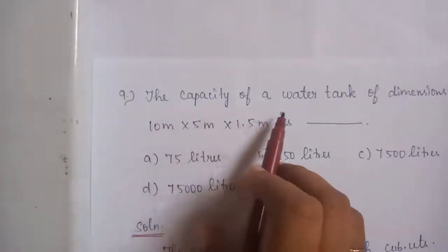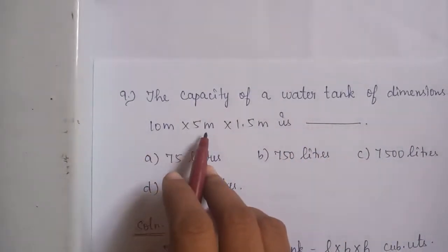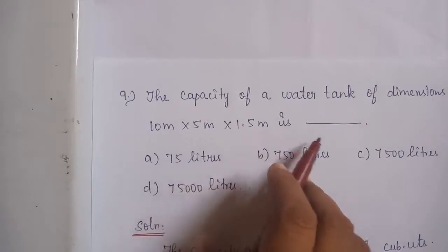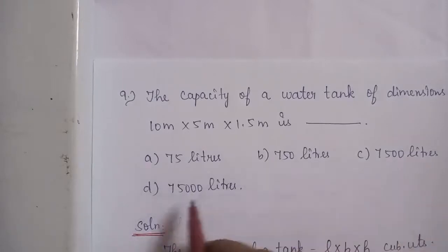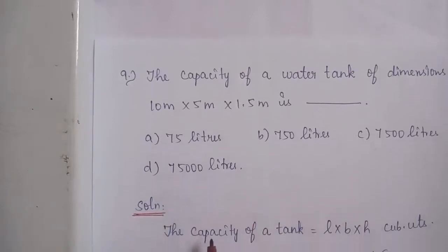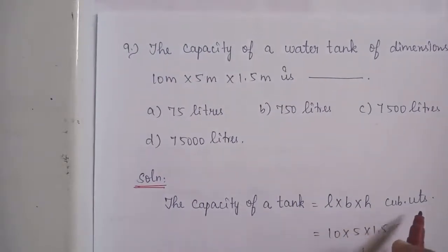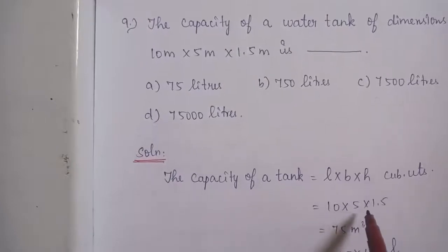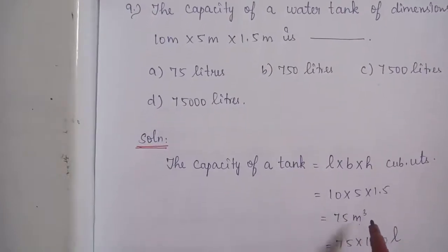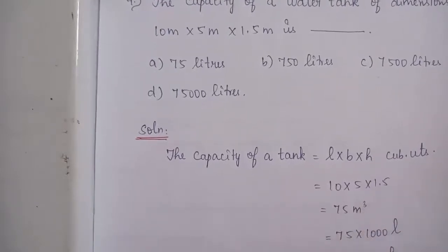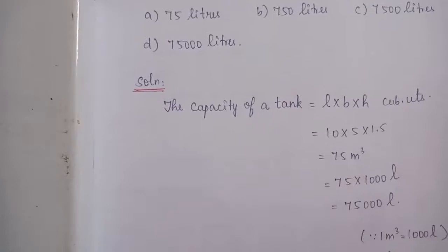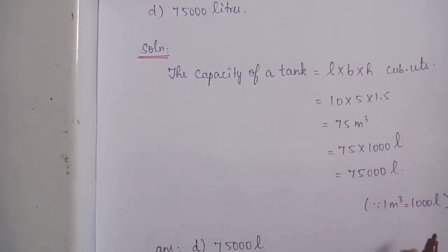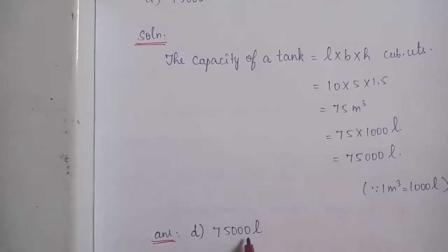Question No. 9: The capacity of a water tank of dimensions 10 m by 5 m by 1.5 m is dash. Option A: 75 litres. Option B: 750 litres. Option C: 7500 litres. Option D: 75,000 litres. Solution: Capacity equals length × breadth × height, which equals 10 × 5 × 1.5 equals 75 m cube. Converting to litres: 75 × 1000 equals 75,000 litres, since 1 m cube equals 1000 litres. The correct answer is Option D: 75,000 litres.